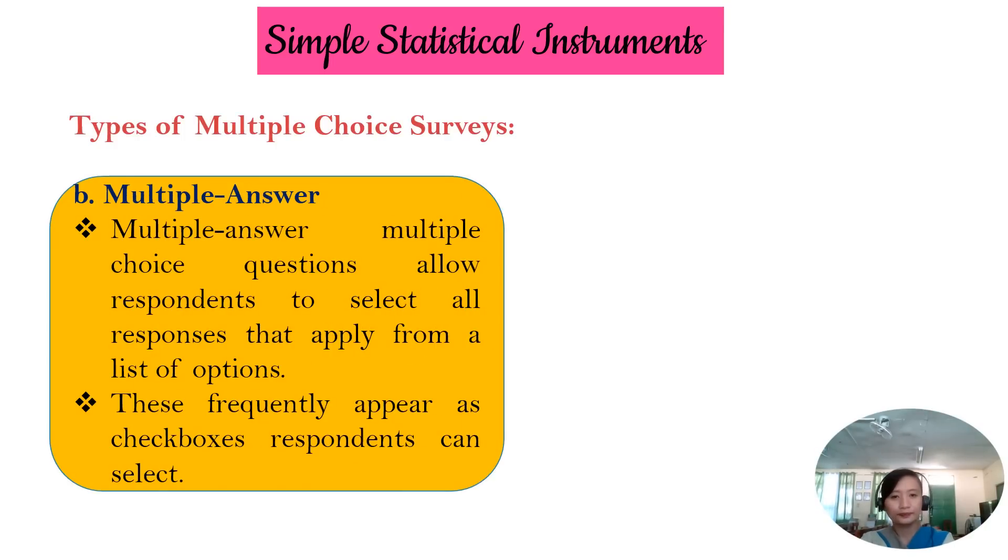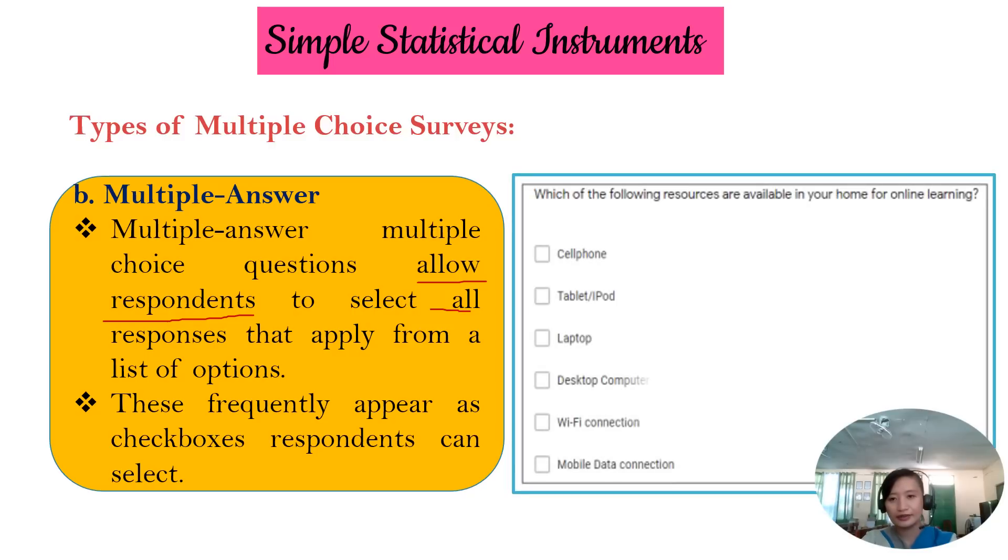Here is the second type, which is the multiple answer. For multiple answer, it allows respondents to select all responses, as many as they can, that apply from a list of options. These frequently appear as checkboxes respondents can select. Here is an example. Which of the following resources are available in your home for online learning? So if you have a phone, you have a tablet, you can select as many as you can, or you can select all of it. So that is for multiple answer multiple choice.